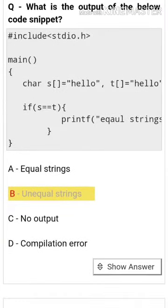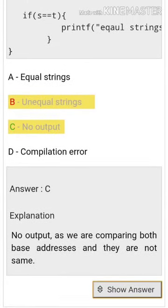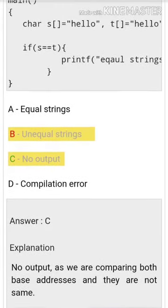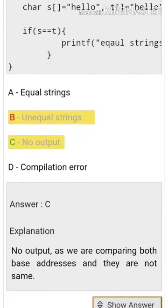What is the output of the code snippet? No output, as we are comparing both base addresses and they are not the same address.